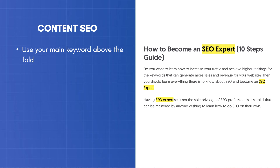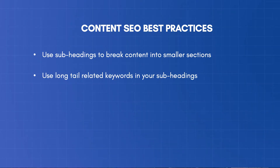The third technique is to use subheadings to break content into smaller sections. This makes the content easier to scan by search engines and users. The fourth technique is to use variations of your main keyword in the subheadings and content. When you are targeting a specific keyword, you don't just repeat that over and over again, but you should use variations of that keyword in your content.